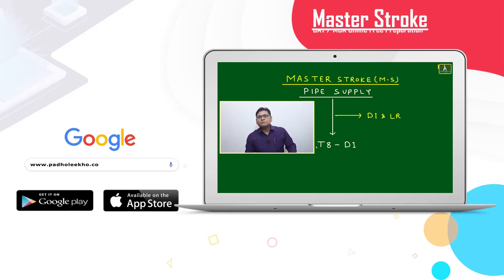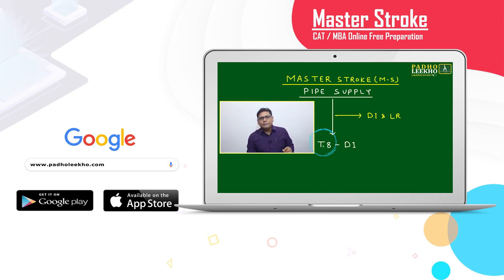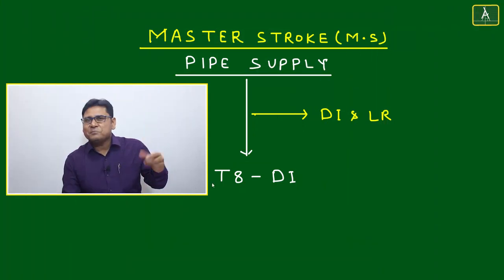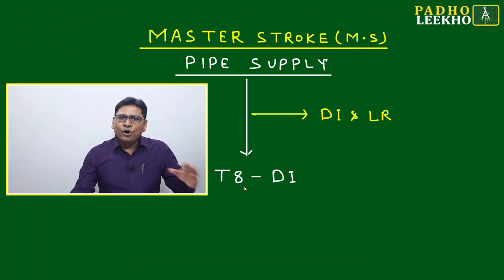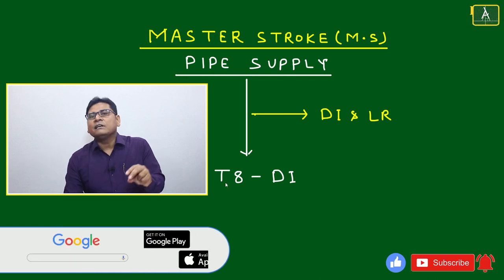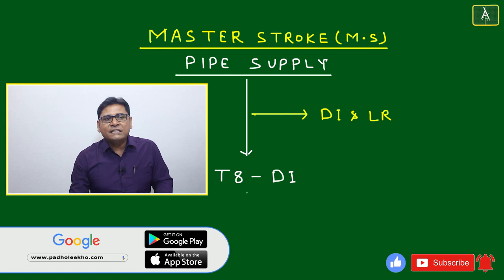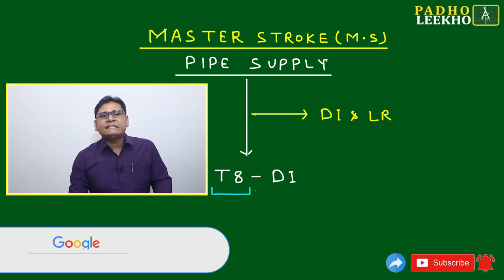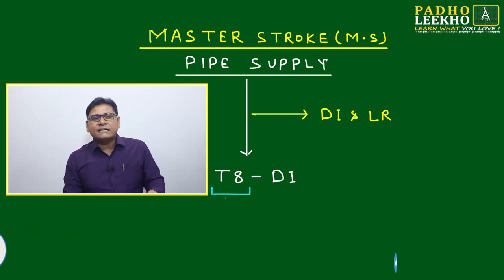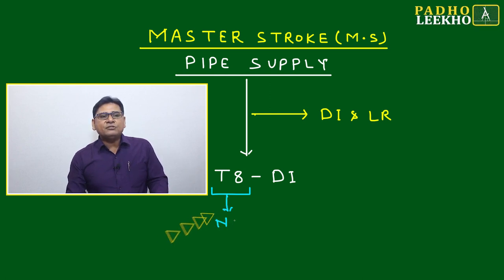Welcome to this master's talk session related to DI. This is based on the T8 type of DI caselet. T8 type is generally called a miscellaneous type — whatever is not covered in types 1 to 7 can be covered in T8. One subcategory of T8 is related to networks.